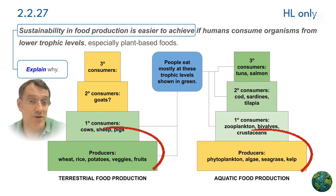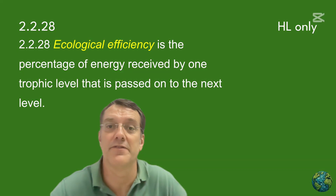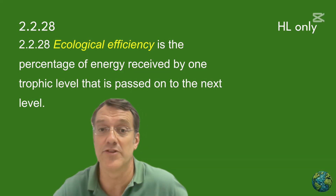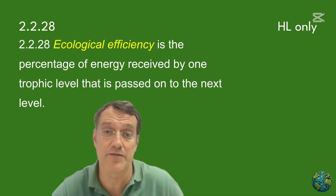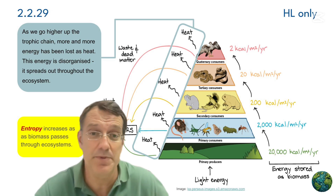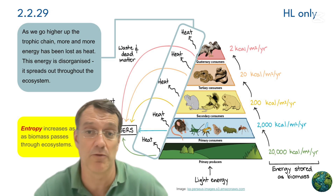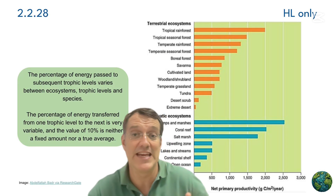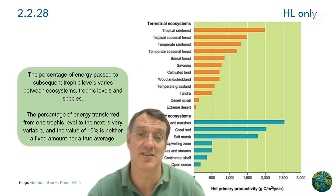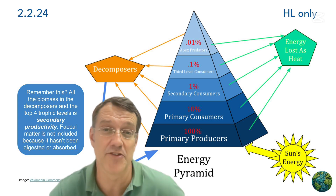Ecological efficiency measures the percentage of energy transferred from one trophic level to another. The transfer typically ranges from 5 to 20 percent and varies between ecosystems and species. A lot of times you'll see this referred to as the 10 percent rule because it's right in the middle of that range.